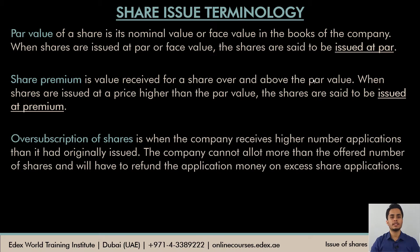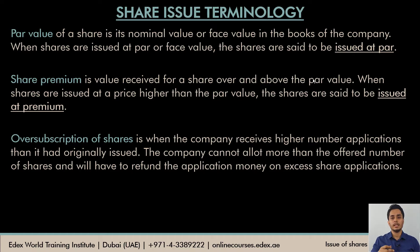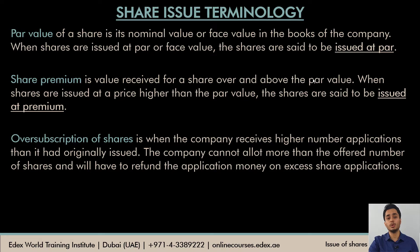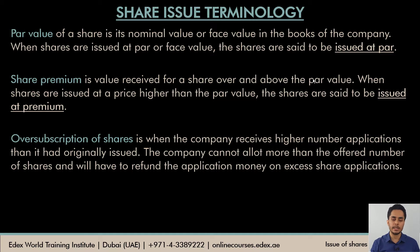When a company offers its shares to the public, it may offer a certain number of shares, but it is not necessary that it receives subscriptions for exactly the same number. It may receive subscriptions for a lower number, or in most cases, a higher number of shares. Such a situation is known as oversubscription of shares. In this case, the company cannot allot shares to everyone who has applied — you can at most allot whatever shares were originally offered. The extra applications will have to be rejected and their money refunded.